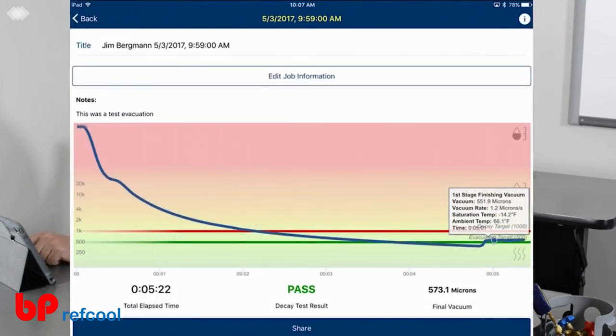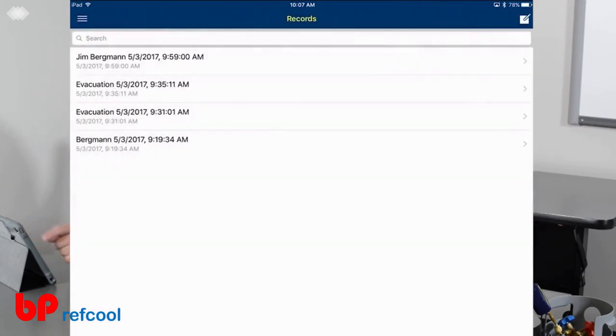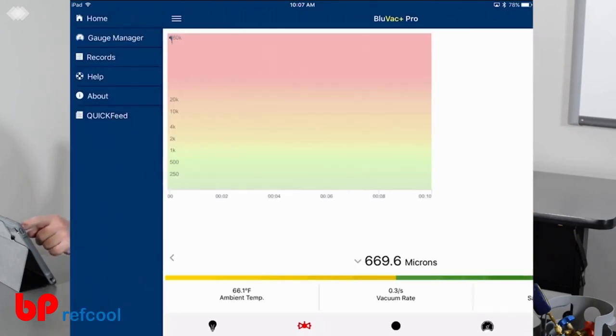On this target here, I can tap and I can look at any section of the graph I want to look at. If I want to look at my finishing vacuum, anything like that, I can do that.